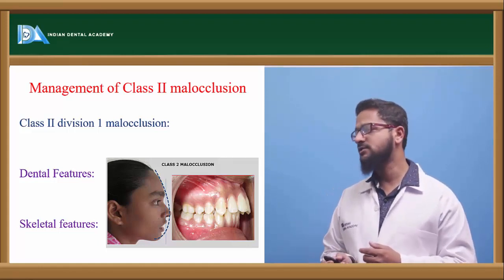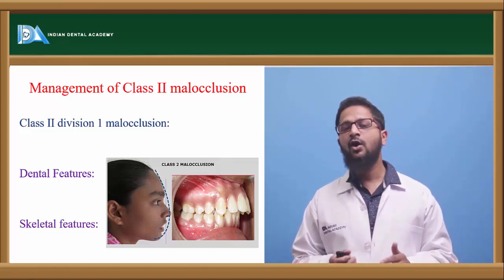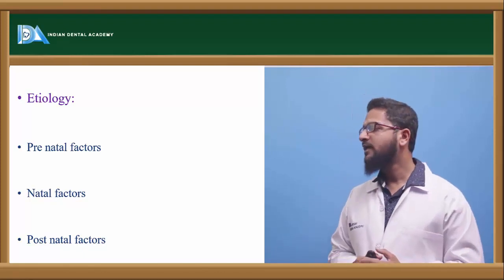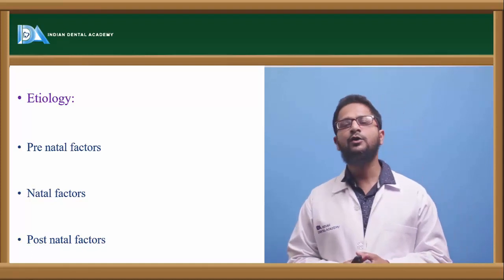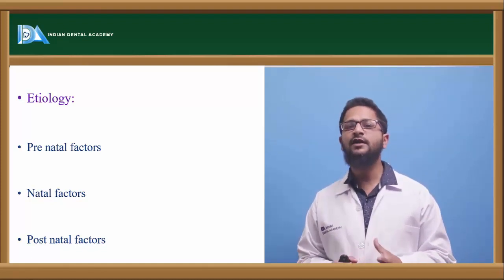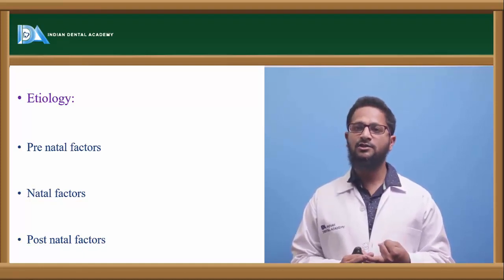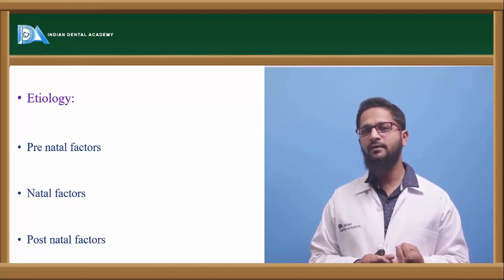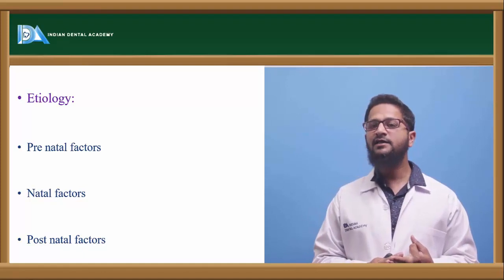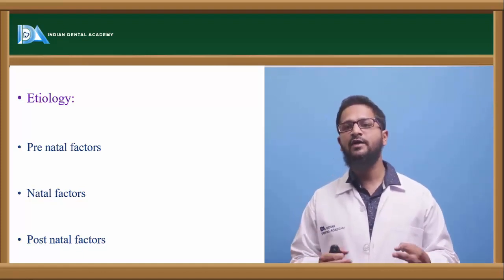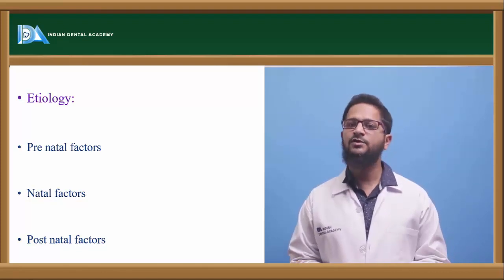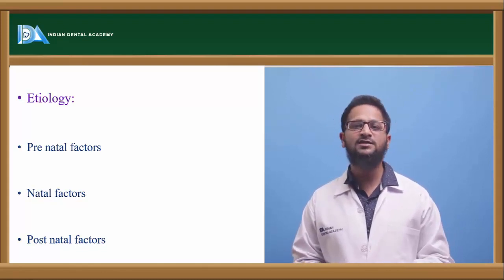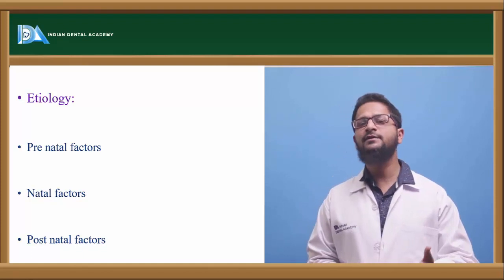The skeletal features seen in these patients include maxillary prognathism, mandibular retrognathism, or a combination of both. What is the etiology for Class II Division I? It can be prenatal factors such as excessive intrauterine pressure during pregnancy or severe teratogens — consumption of certain contraindicated drugs by the mother like methotrexate, or occurrence of certain diseases during pregnancy. Natal factors can be abnormal forceps delivery — abnormal application of pressure through forceps during delivery. Postnatal factors include indulgence in abnormal habits like thumb sucking, tongue thrusting, mouth breathing, or rheumatoid arthritis.